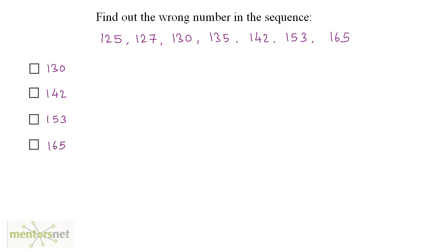So what is wrong with this sequence of numbers now? Consider the first number and the second number. In order to obtain the second number from the first number, you will have to add 2. 125 plus 2 is 127. Now, 127 plus 3 is 130.